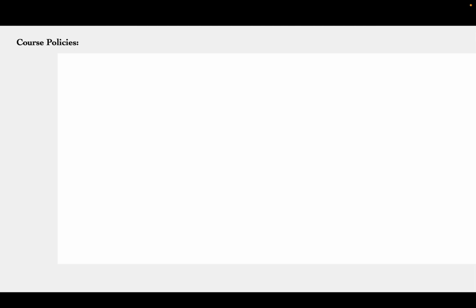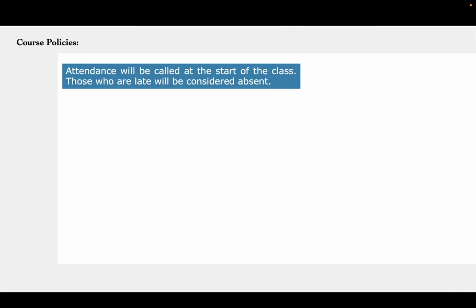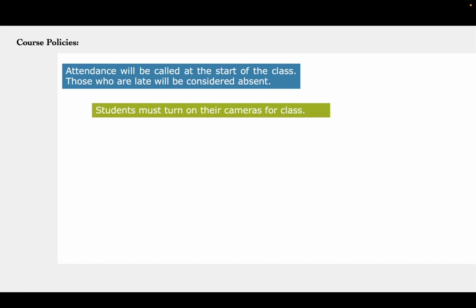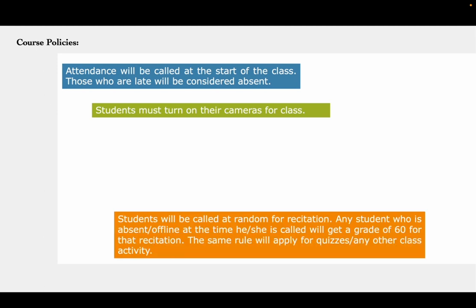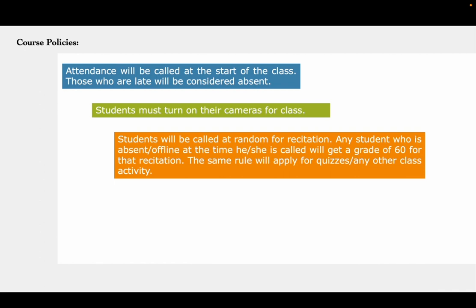I will be discussing the course policies for this subject. If we are going to have a face-to-face class or synchronous classes, attendance will be called at the start of the class, and those who are late will be considered absent. Whenever we are going to have synchronous classes, students must turn on their cameras during the entire duration of the class. Students will be called at random for recitation. Any student who is absent or offline at the time he or she is called will get a grade of 60 for that recitation. The same rule will apply for quizzes and any other class activities.